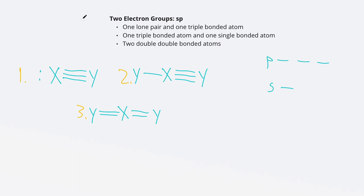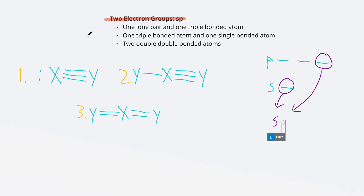For our last case, when we have two electron groups, the atom becomes sp hybridized. Three images show different ways to have two electron groups. For all of these, obeying the octet rule requires at least a triple bond or two double bonds. As you might predict, one of the P orbitals and the S orbital combine to form the sp subshell with two orbitals, leaving a P subshell with two remaining orbitals. The electrons in the P subshell will be relatively equal in energy, and the electrons in the sp subshell will be relatively equal in energy.